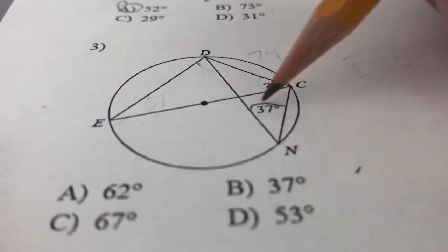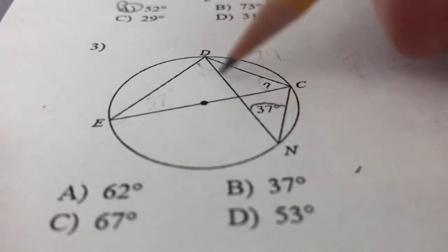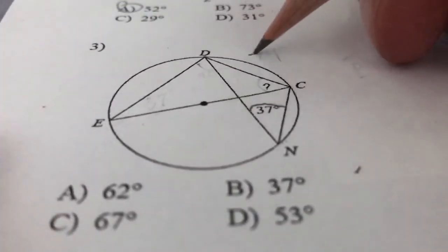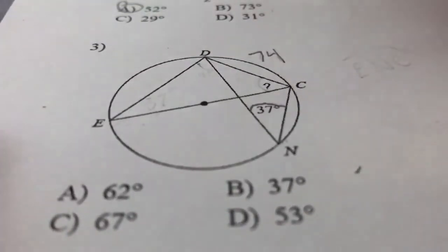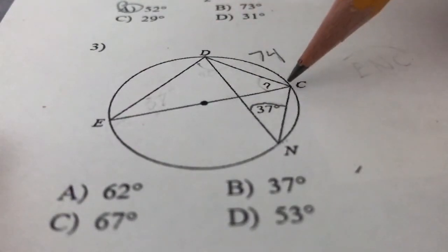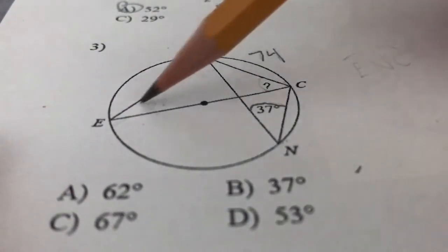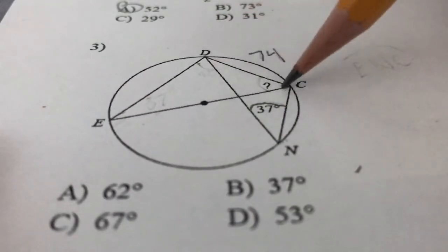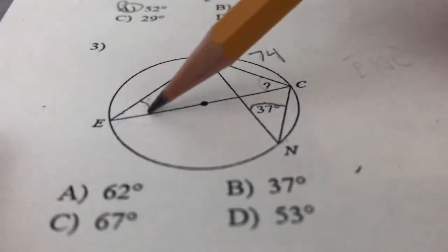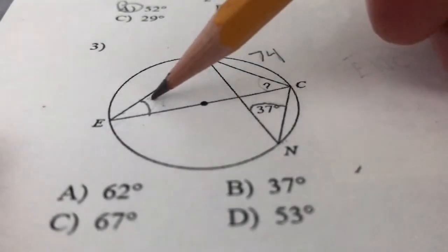From there, if that's 37, we know that if DNC is 37, arc DC is going to be 74. If arc DC is 74, we also can see that because this is an inscribed angle, where this is the intercepted arc, we could also say that that is 37 as well.